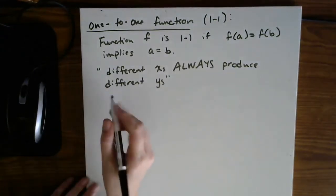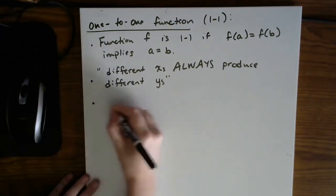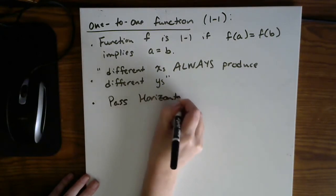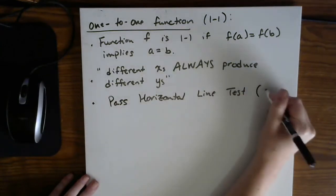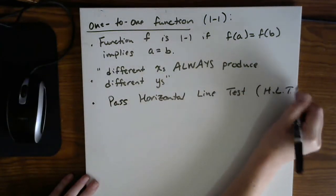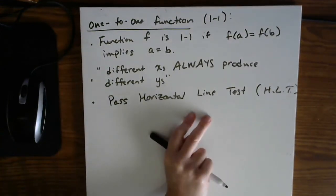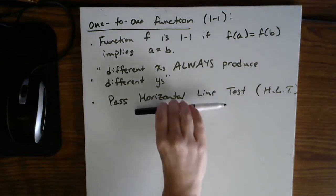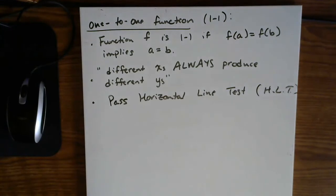Now, the easy way to tell if something is one-to-one is that it should pass the horizontal line test. So we used the vertical line test just to determine whether or not we had functions. We now use the horizontal line test to determine whether or not those functions are one-to-one. So same idea. Any horizontal line that you draw on your function should hit a function at most once.